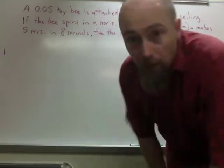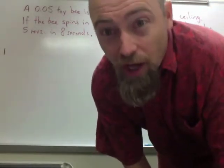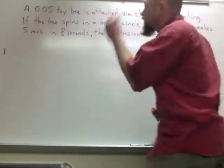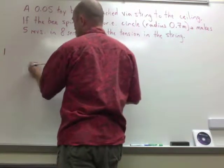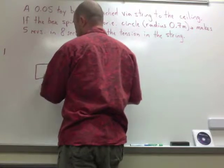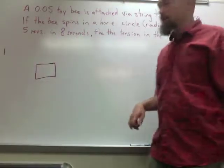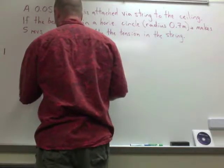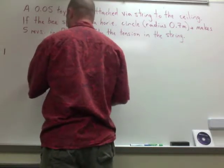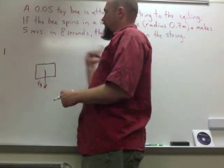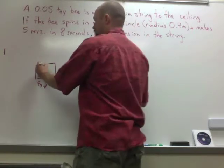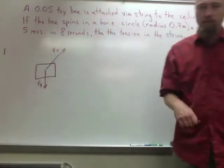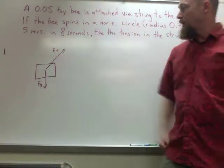Alright, so again, first step, as pretty much always in this unit, is to draw your free body diagram. So, here is my toy bee. And yes, I know, that looks exactly like a toy bee. And then we draw forces acting on it. Force of gravity going straight down. And then I'll have my bee going around this way, so that the force of tension is going to be going this way. Okay, so that is my free body diagram.